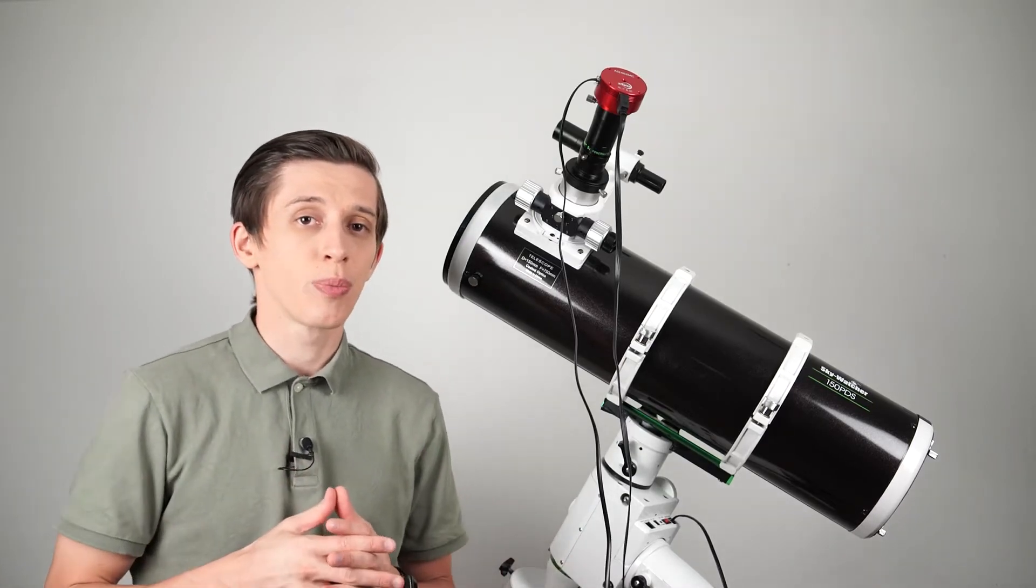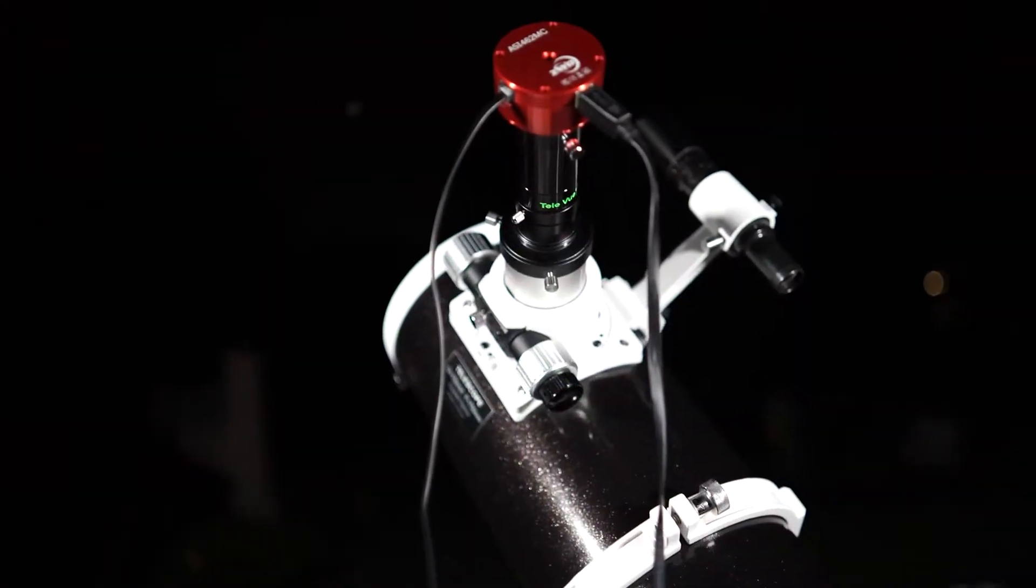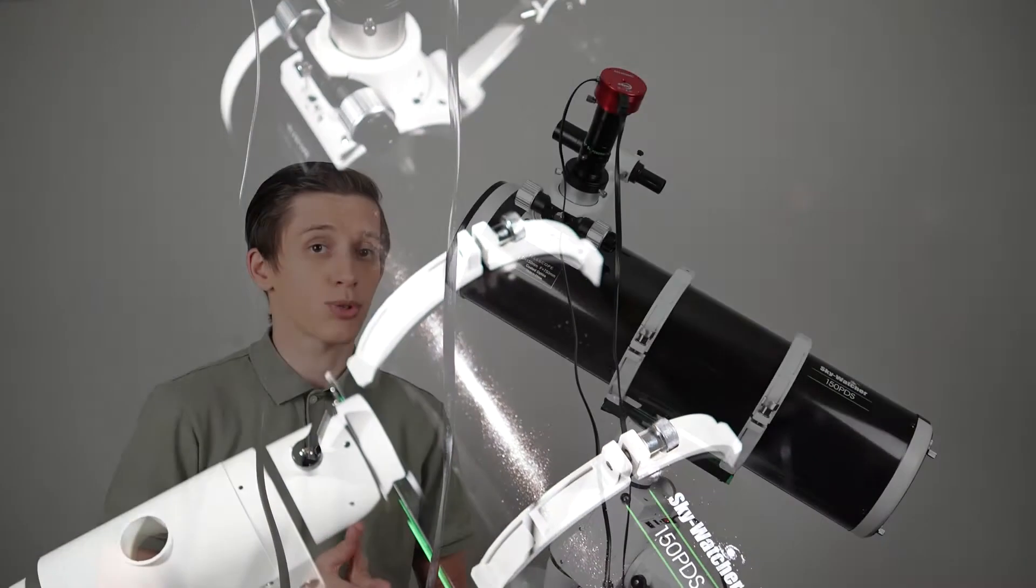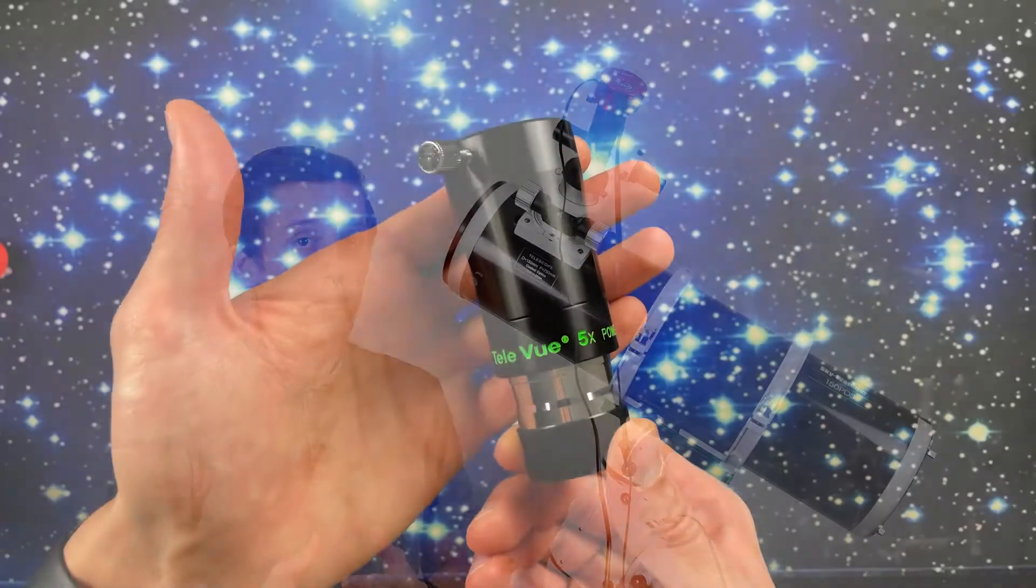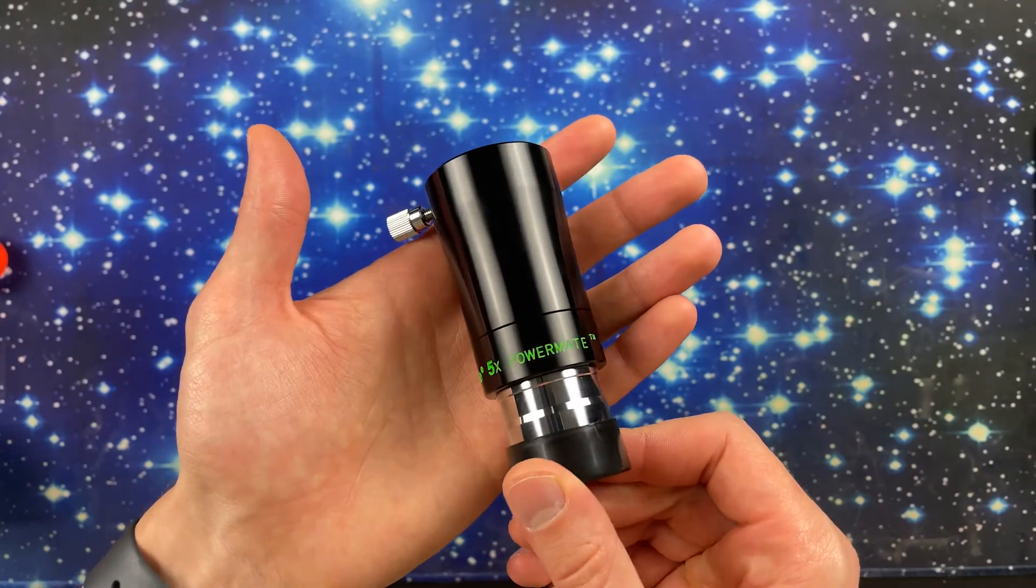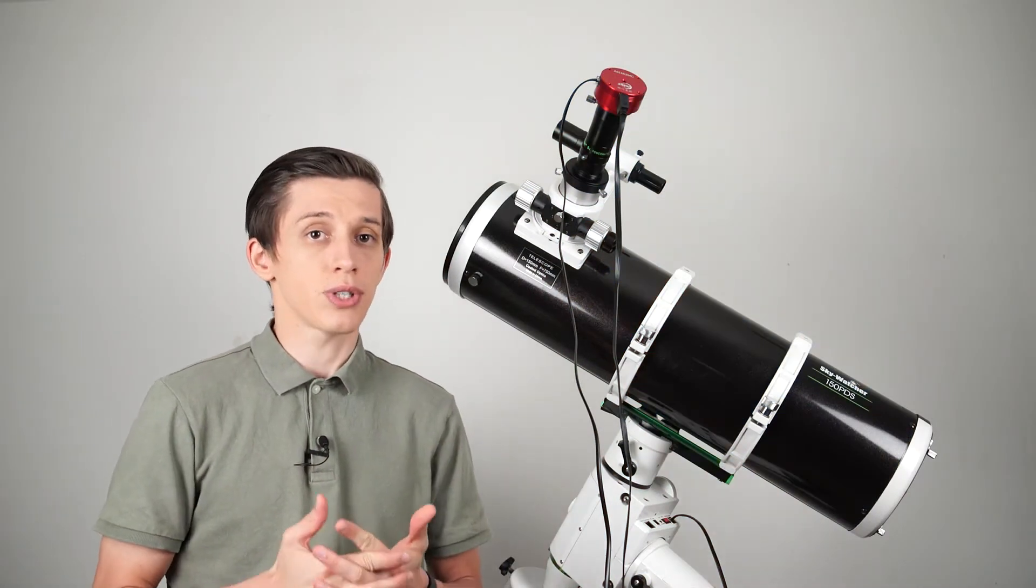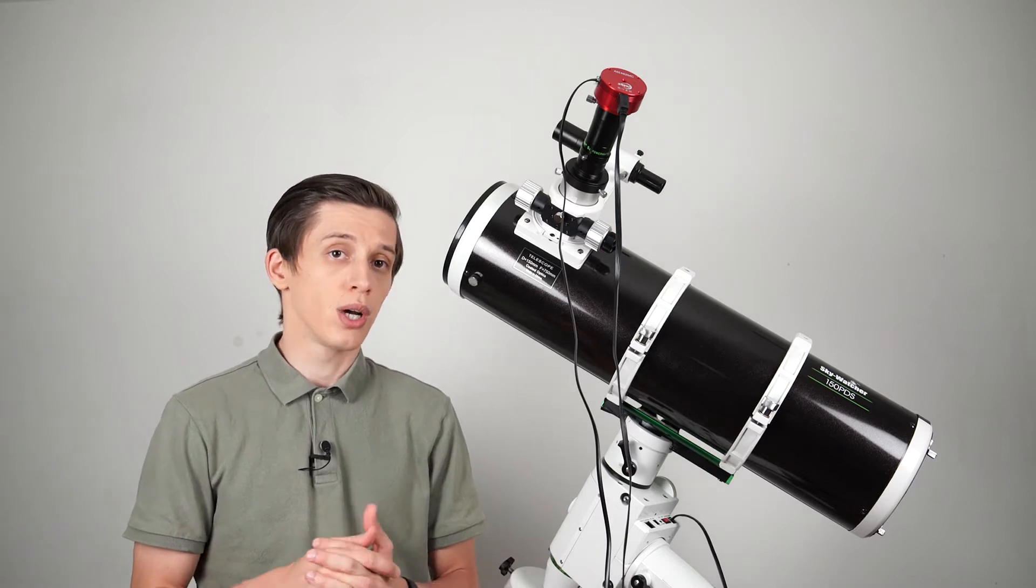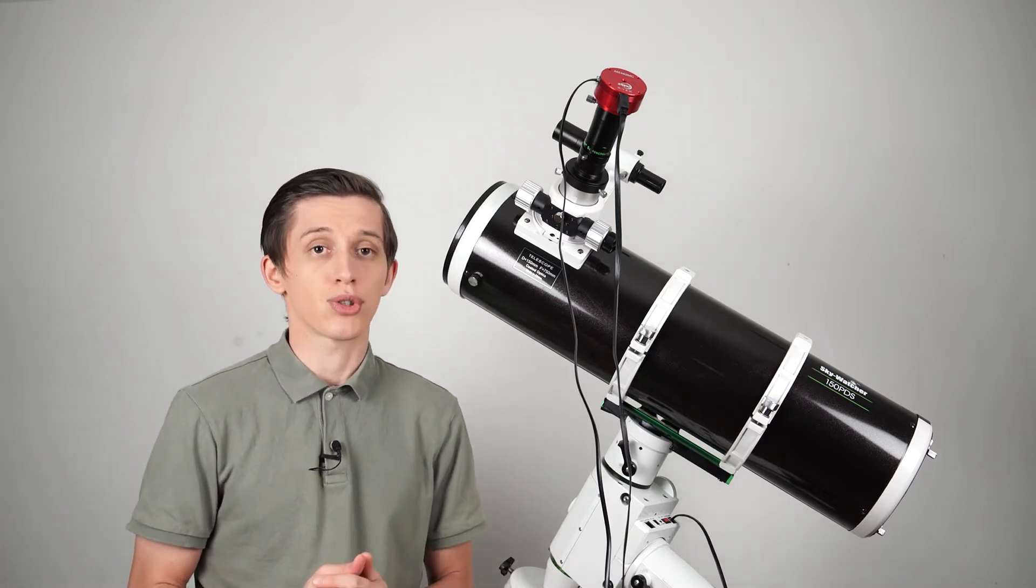My main imaging telescope is Skywatcher 150 PDS. It is a 6 inch Newtonian reflector telescope that has 750 millimeter focal length which is not enough if you want to capture planets. So I use a Barlow lens that helps me to increase the focal length. In my case it is Televue Powermate 5x and the job it does is increasing the focal length of the telescope five times which makes it equivalent to 3750 millimeter which is good if you want to capture a planet.